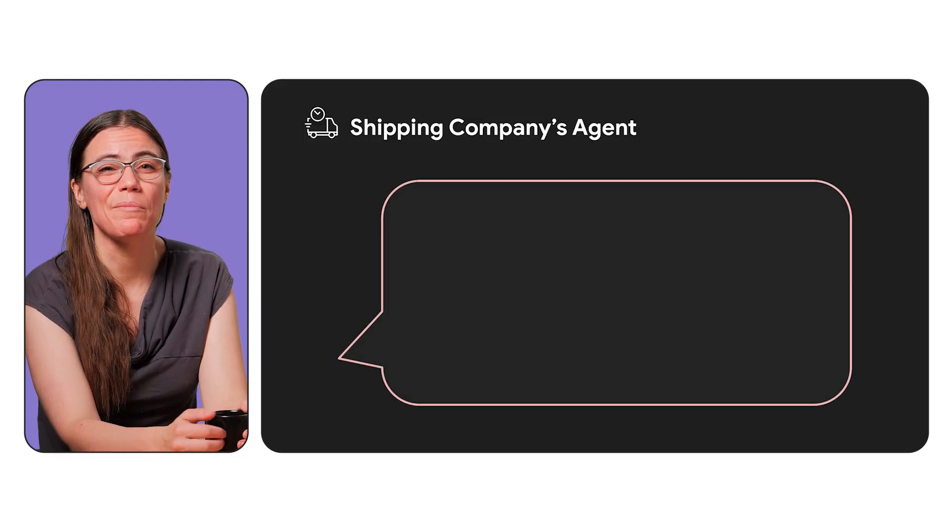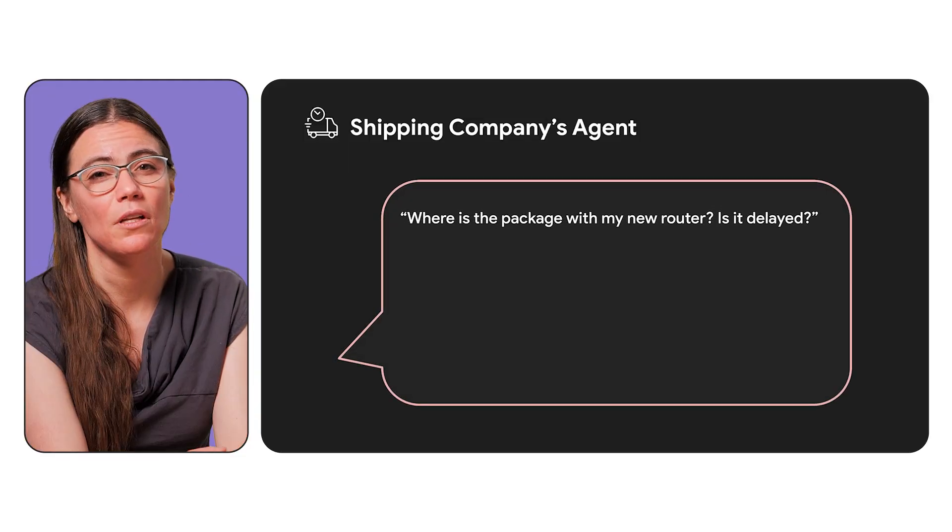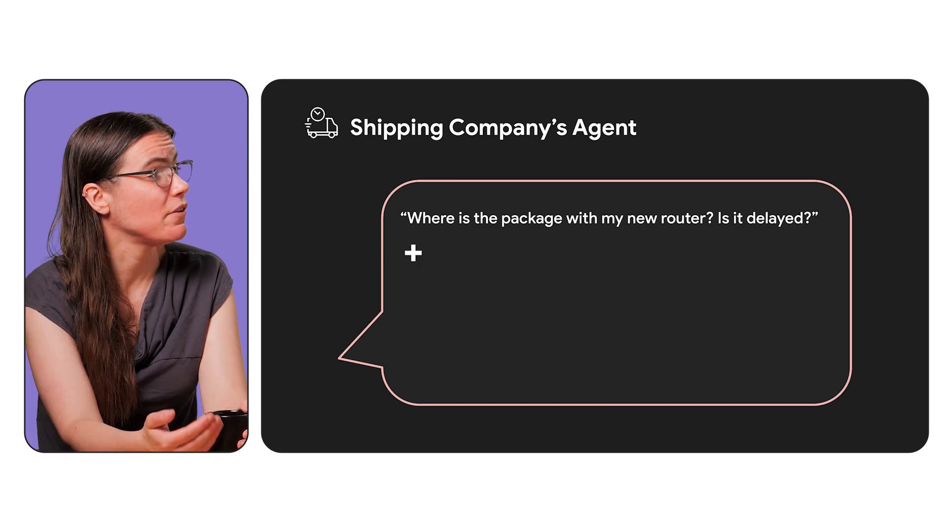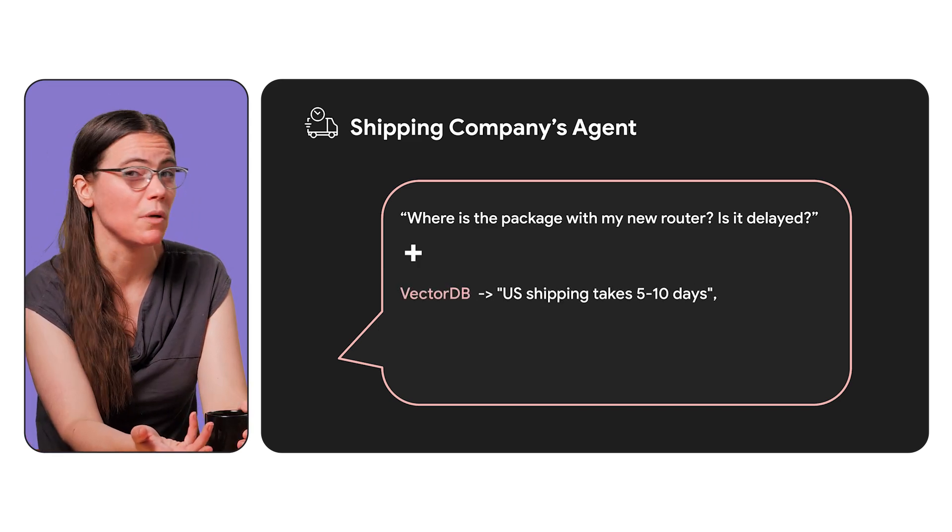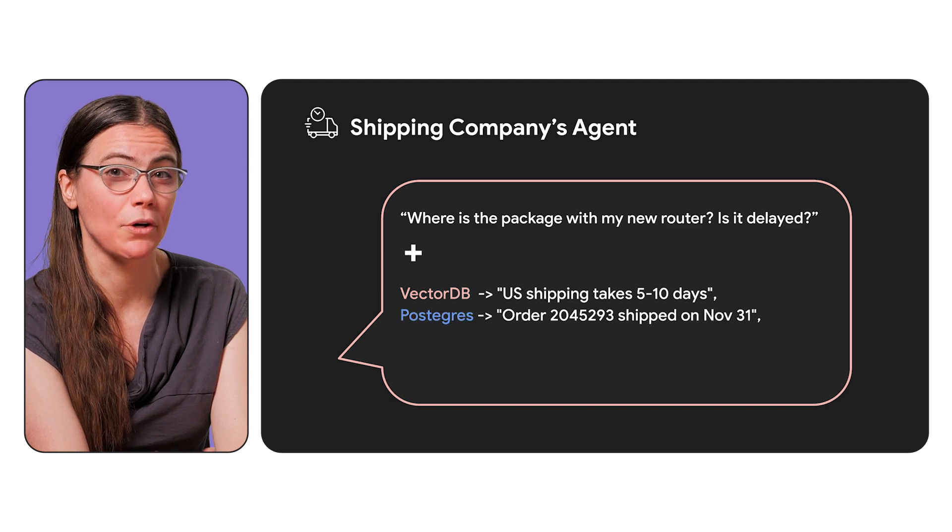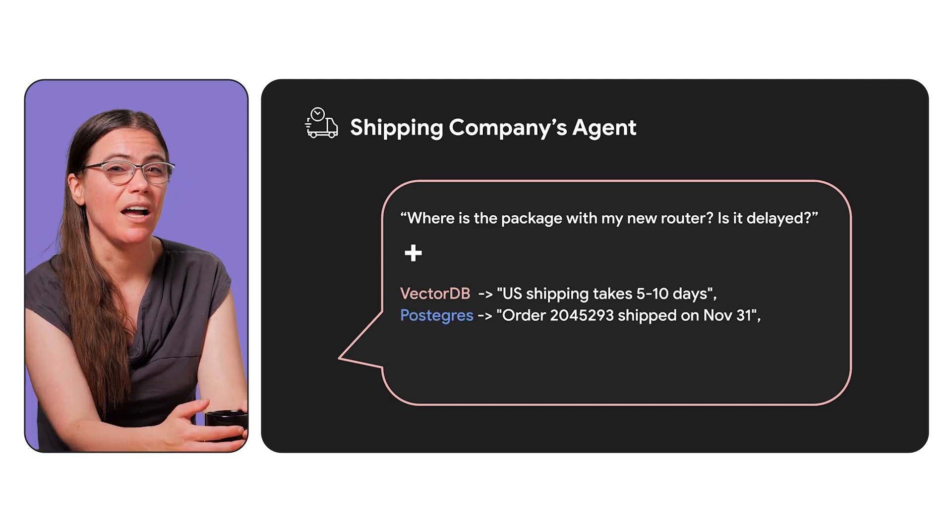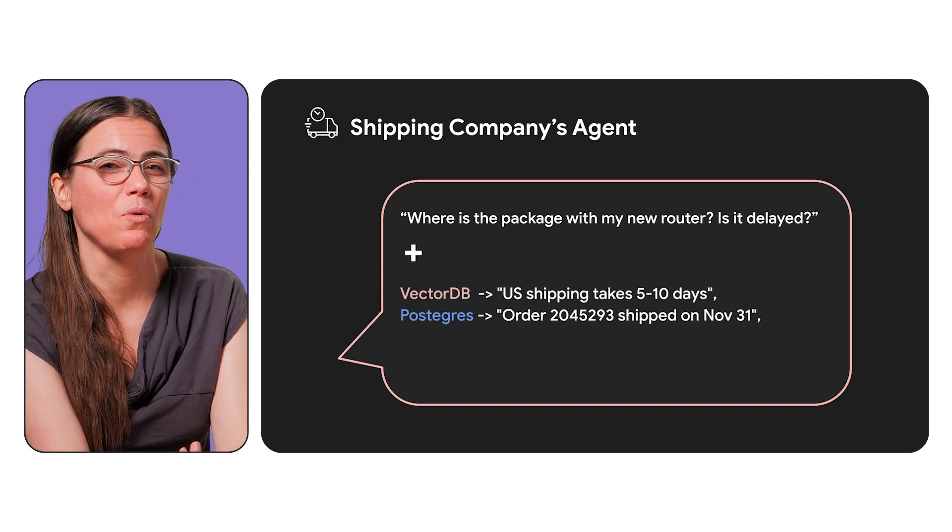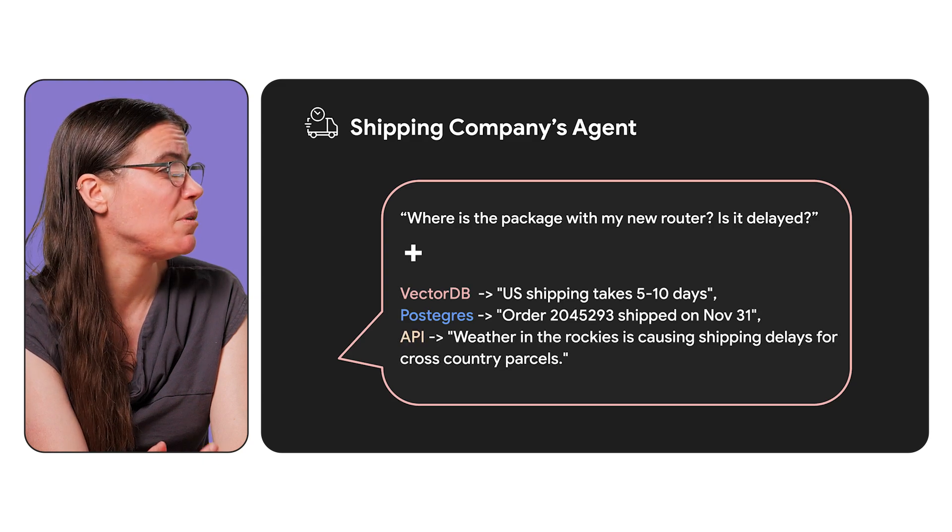And if you have data in multiple data stores, you can combine them at the retrieval stage of RAG. I think we need another example. Fair enough. If a customer's prompt was about delayed shipment, you could combine information about shipping methods from documents in your vector database with information about a customer's recent orders from a Postgres database and general information about the weather impacts on shipping from maybe the shipping company's API. And then our LLM's response would potentially contain information from all those sources if it was needed to actually answer the question.